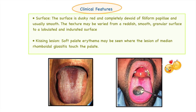A characteristic feature of median rhomboid glossitis is the kissing lesion. This occurs because the lesion on the dorsum of the tongue, when it comes in contact with the soft palate during various activities, causes soft palatal erythema. This erythema appears just above where the lesion of median rhomboid glossitis touches the palate, appearing as if duplicated on the soft palate surface. Median rhomboid glossitis is closely associated with the term kissing lesion.